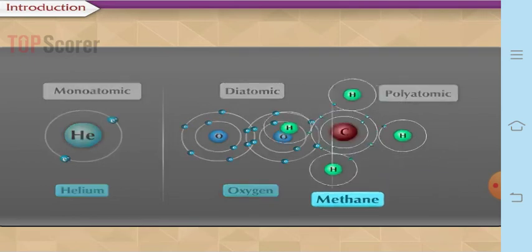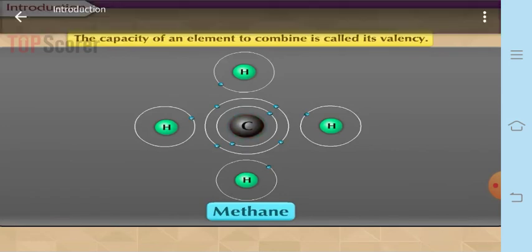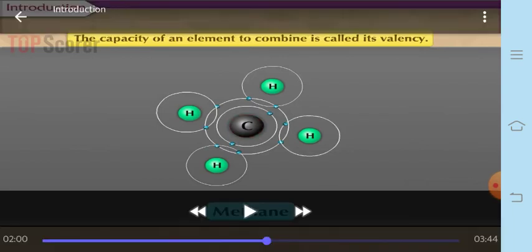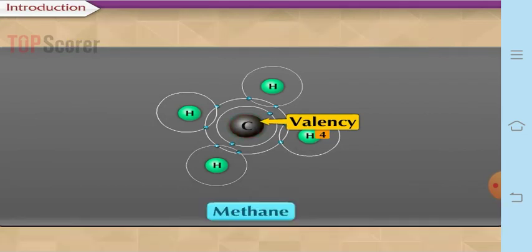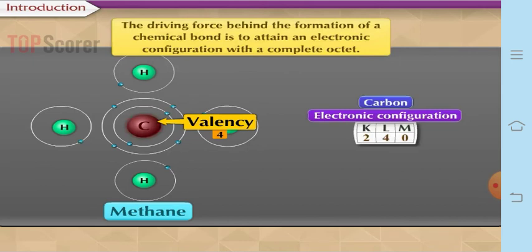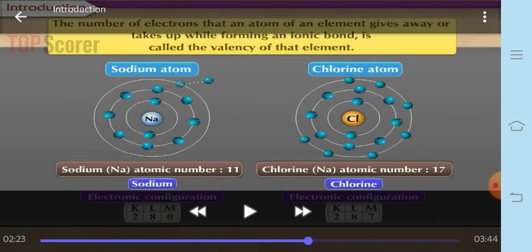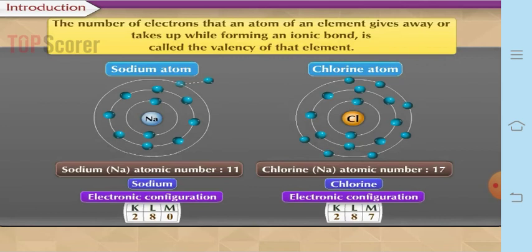Now let us answer the next question: what is valency? Valency is the capacity of an element to combine with another element. This capacity is decided by its electronic configuration. For example, carbon has a valency of four, so it can combine with four hydrogen atoms. The driving force behind the formation of a chemical bond is to attain a fully filled octet. Atoms attain a complete octet by either giving, taking, or sharing electrons. Now, the number of electrons that an atom gives away or takes up while forming an ionic bond is called the valency of that element.